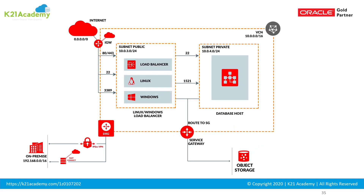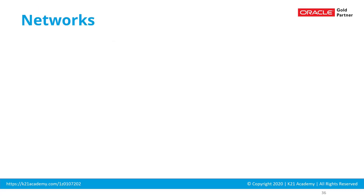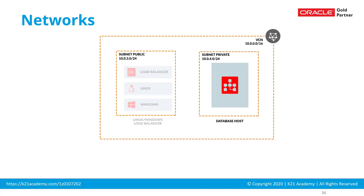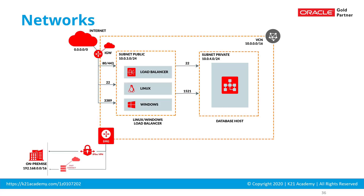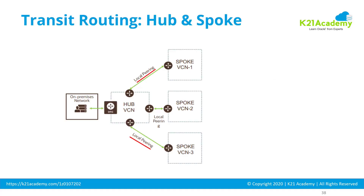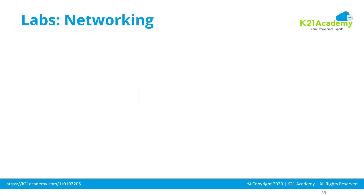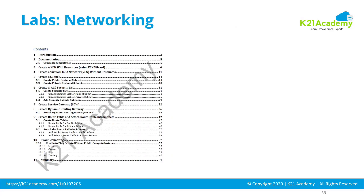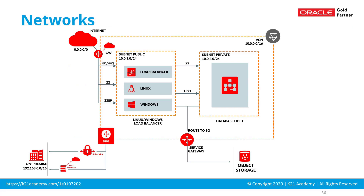Networking is one of the most important and at the same time most challenging services that you must know. What you must learn as part of basic networking includes VCNs, subnets, different types of gateways, load balancers, and then advanced networking like transit routing hub, VCN local and remote peering, and the hands-on labs you must perform.